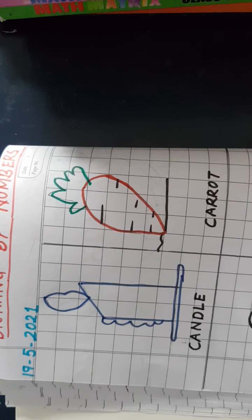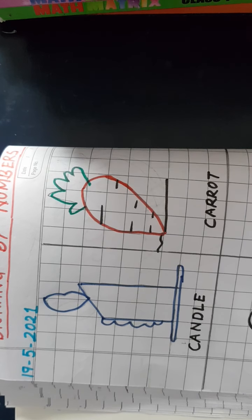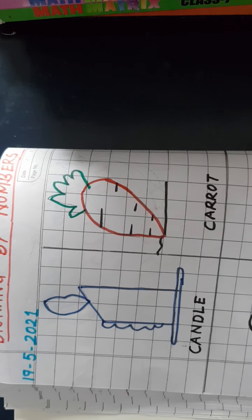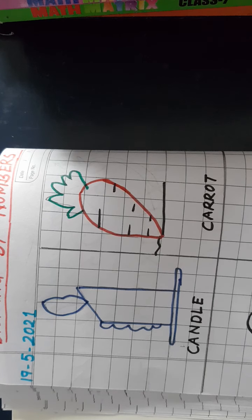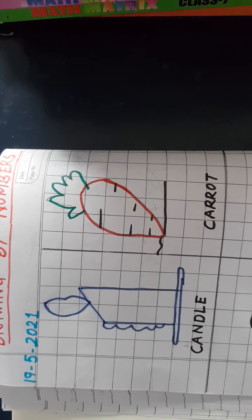These pictures are drawn by the numbers. If you know how to write the numbers 1 to 4, then you can draw the pictures and color them differently. Let me show you first.